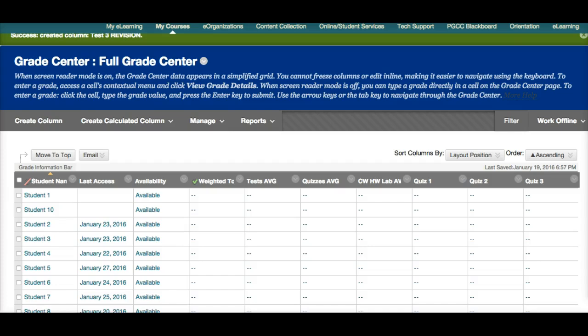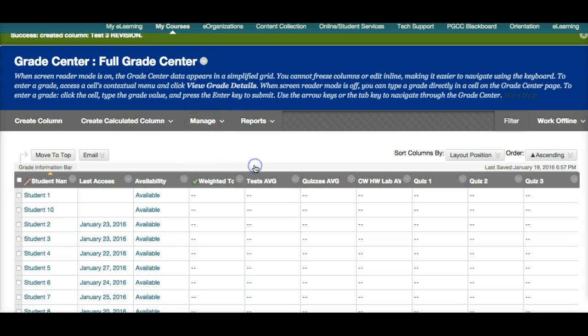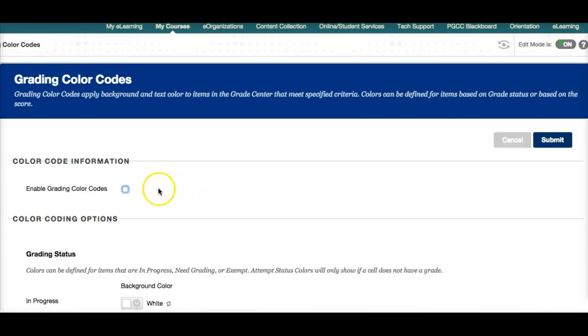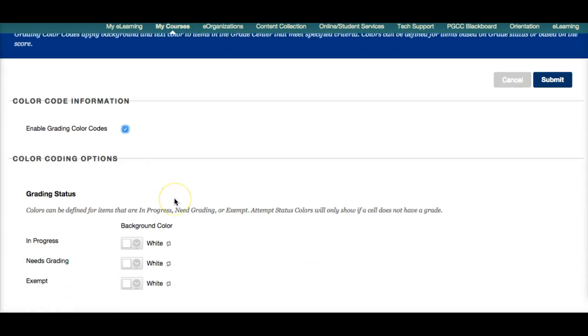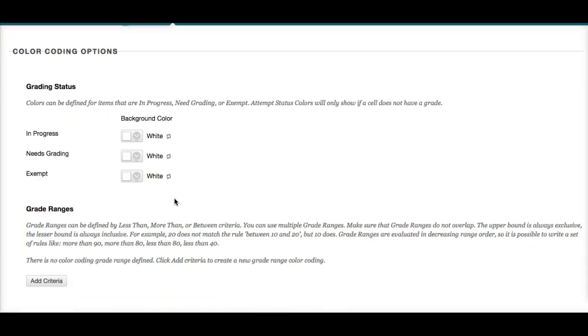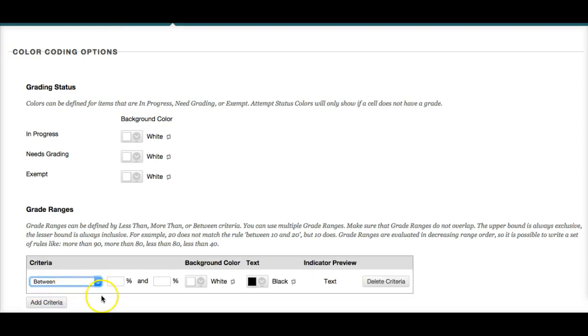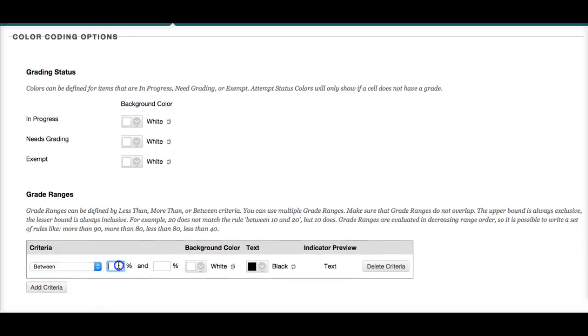If you want to color code your grades, you can go to manage, grading color codes. And grade ranges, we go to add criteria.